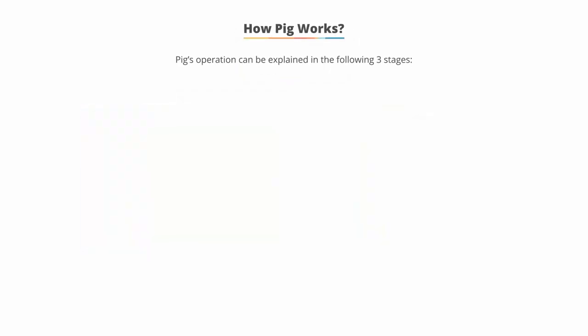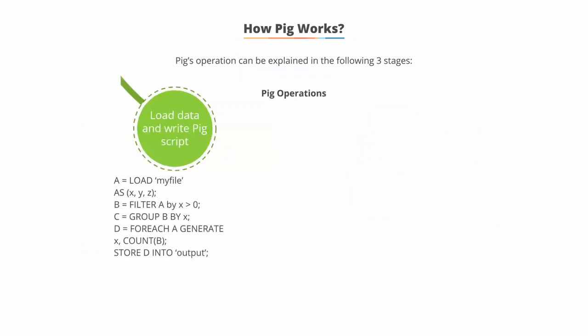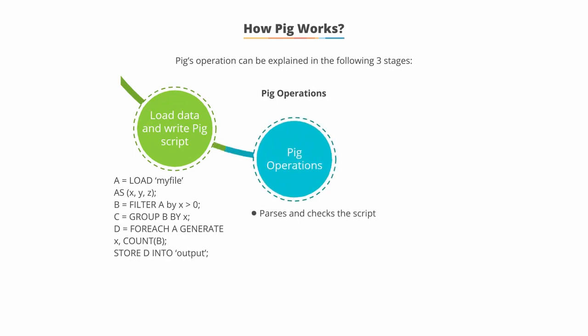Pig's operation can be explained in three stages. In the first stage, the data is loaded and a Pig script is written. In the second stage, the Pig execution engine will parse and check the script. If it passes, the script is optimized and then a logical and physical plan is generated for execution. The job is then submitted to Hadoop as a job comprising both Map and Reduce tasks.